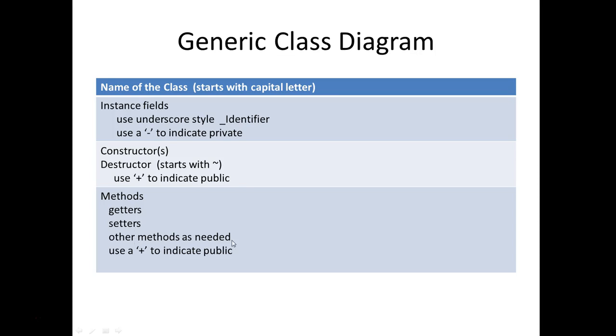Your instance fields, we're going to use the underscore style with the underscore in front of the identifier, and we're going to use a minus sign to indicate private variables. We will also use plus signs to indicate public variables.